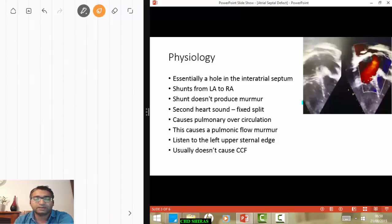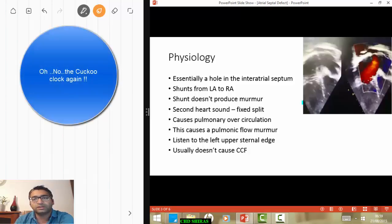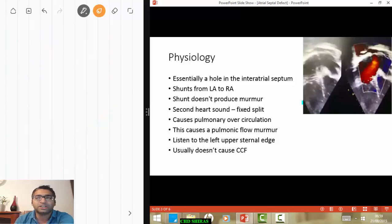So there's a split there and it increases when you're taking a deep breath and decreases when you're breathing out. So that's called a variable splitting. Now because there's a big hole between the left and right atria, the pressure difference between the right and left is obliterated, so there's no delayed closure of the pulmonic valve in inspiration.